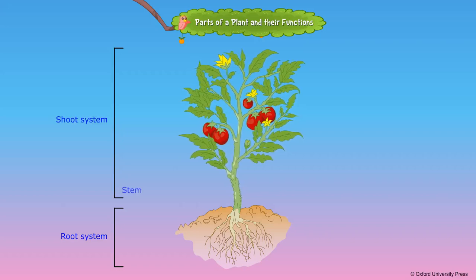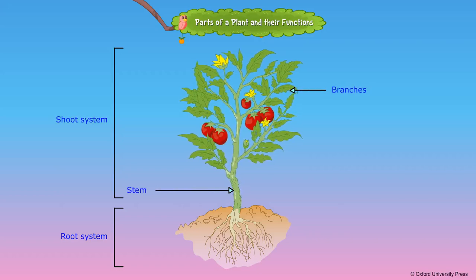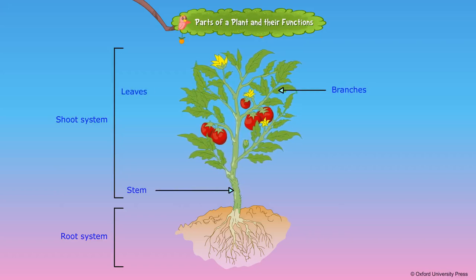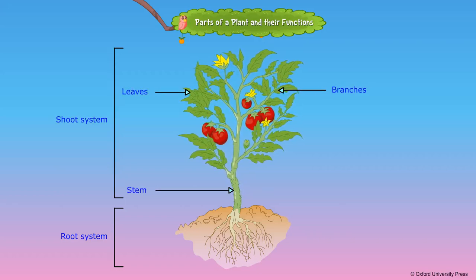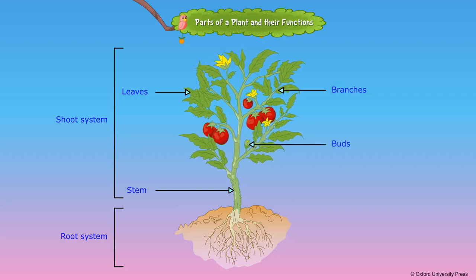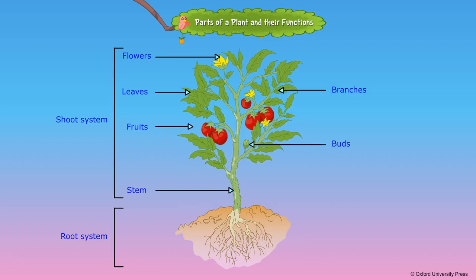The shoot system consists of stem, branches, leaves, buds, flowers, fruits and seeds.